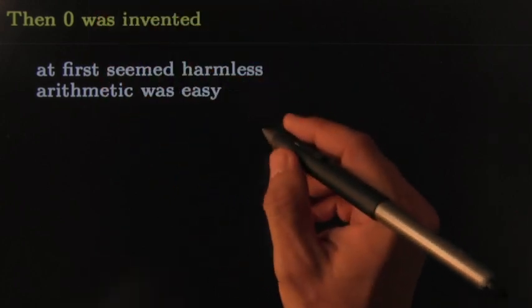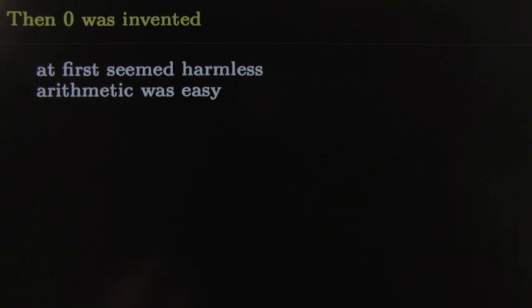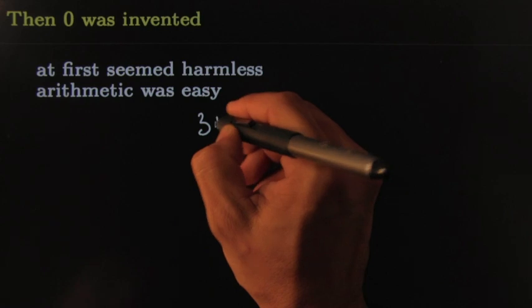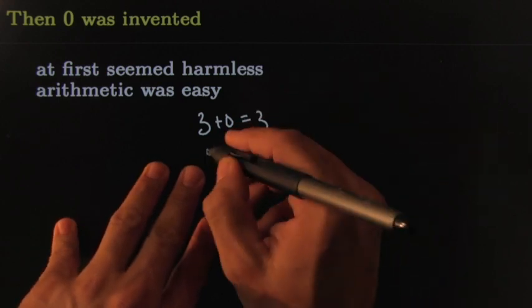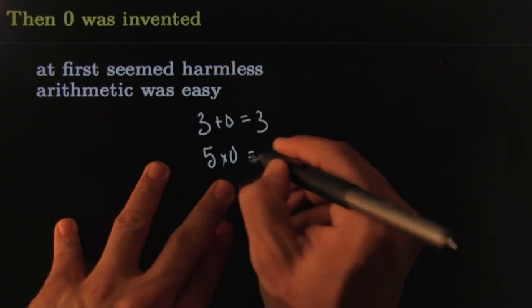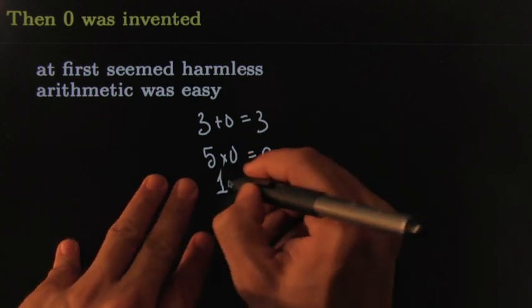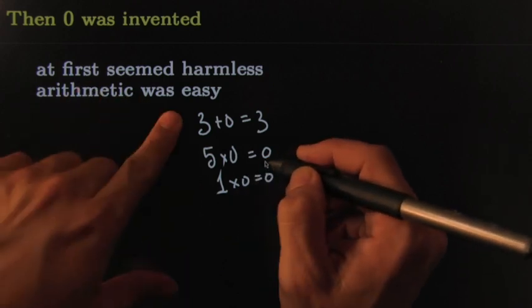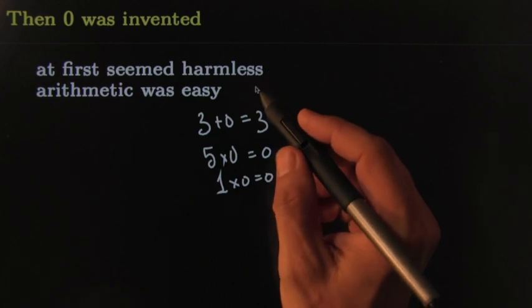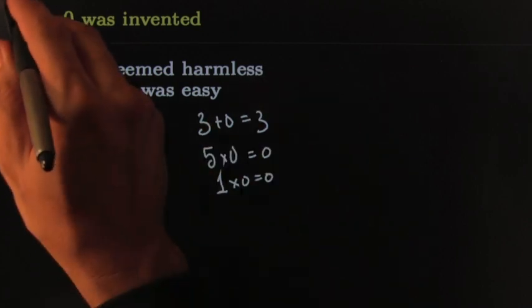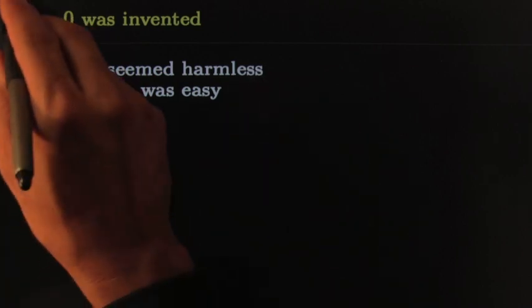Some of the arithmetic was easy. By arithmetic I mean you could easily do things like three plus zero — it wasn't that hard, that's got to be three. You could easily do five times zero — well, that's probably zero. It wasn't even that big of a deal. Arithmetic was pretty easy, pretty harmless at first.